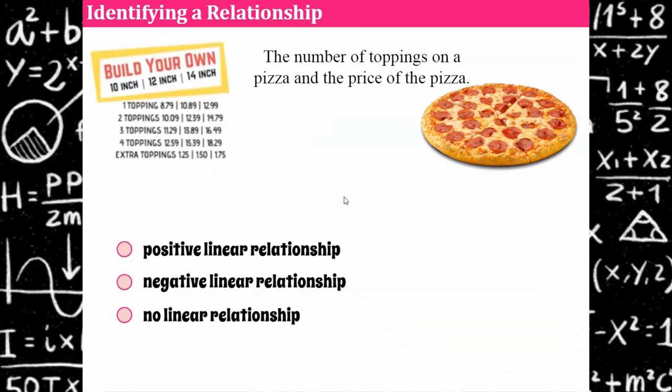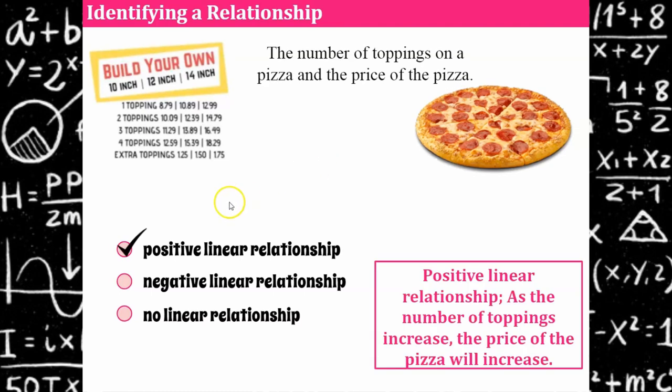Pizza. Everyone likes pizza. What do you think? What kind of relationship? Go ahead and pause and come back and hit play. Welcome back. Hopefully you discovered that this would be a positive linear relationship. The more toppings that you order on your pizza the higher it the larger it's going to cost. Higher price for more toppings.